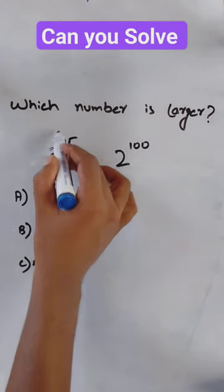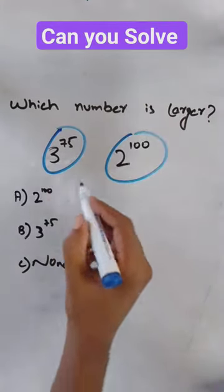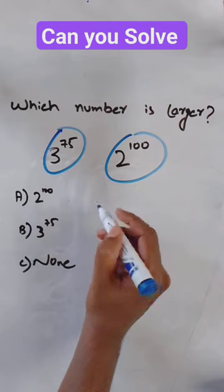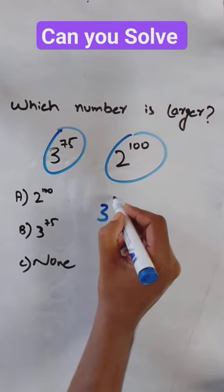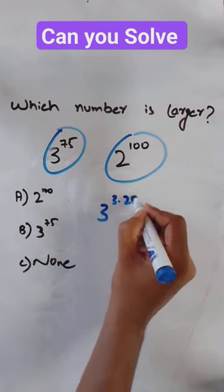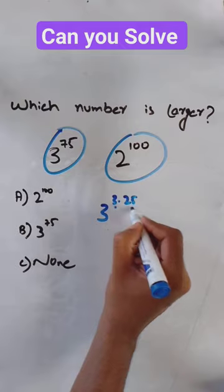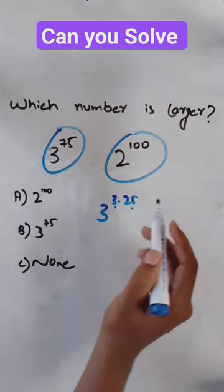Today we find which number is higher. We first break down 3 power 3 multiplied by 25. 3 multiplied by 25 is equal to 75.